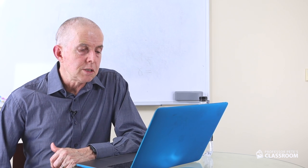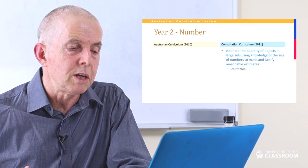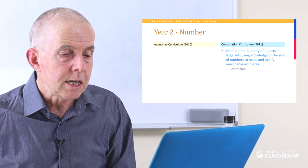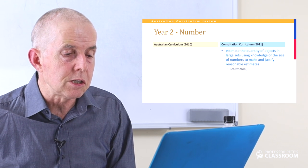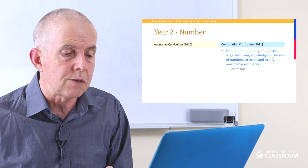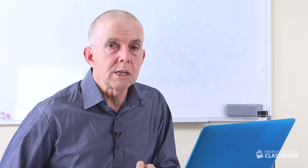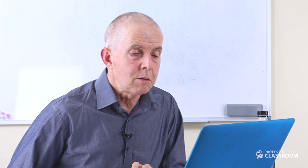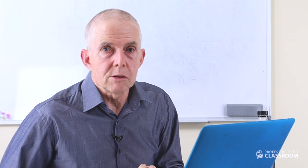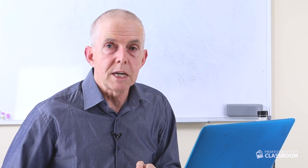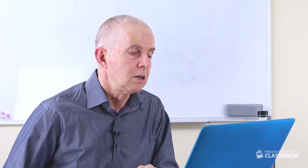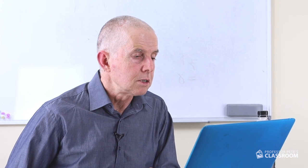The third number content descriptor is all in blue because it's entirely new content: estimate the quantity of objects in large sets using knowledge of the size of numbers to make and justify reasonable estimates. I love that. There's a lot you can do helping students understand how big a number is — asking questions like, how big is a thousand? What could you buy with a thousand dollars? You can tailor the size of the number to the year level.